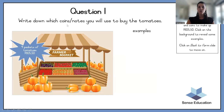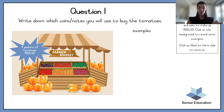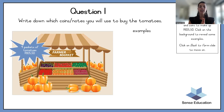Write down which coins or notes you will use to buy the tomatoes. Nine packets of tomatoes are 105 rand and 50 cents. There are lots of different ways you can break up this number. You would use money that you know exists — you wouldn't use money that doesn't exist. For instance, 7 cents doesn't exist, 15 cents doesn't exist. So keep in mind the coins and notes we spoke about earlier.